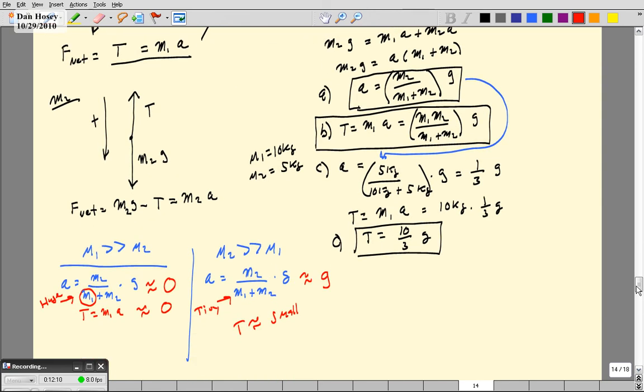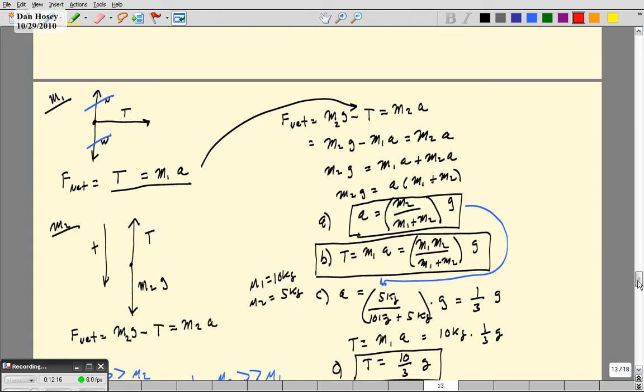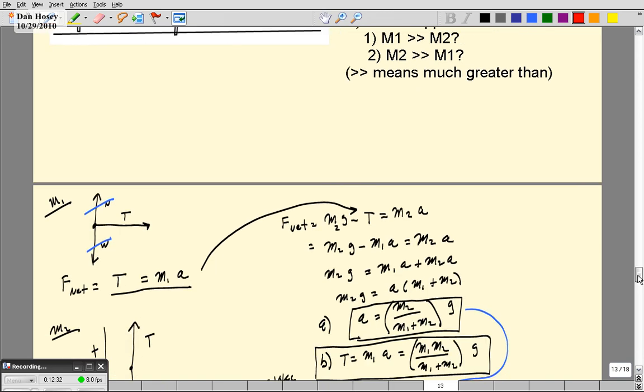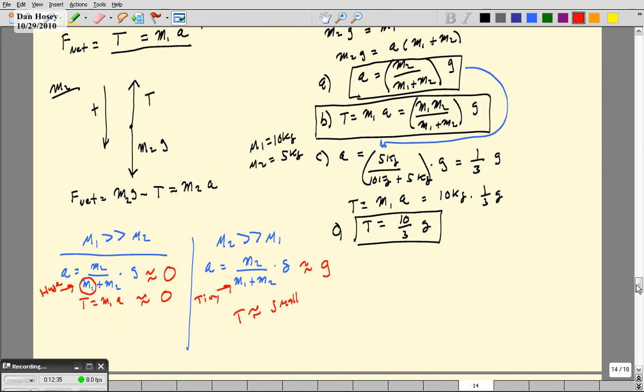It's not a bad idea to check your answer with some limiting behavior to see if it seems reasonable. As these problems get more complex, you're going to apply the same strategy. They'll just be more forces. For example, if we had friction here, this M1 wouldn't just have one force. It would have two forces. If it was on a ramp, we'd have to get components. But the idea is basically the same. So I hope that this helps you, as always. And that's it. Thank you.